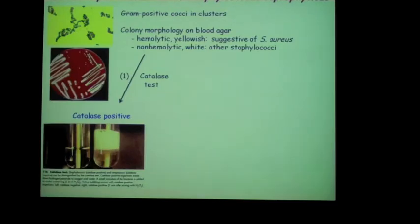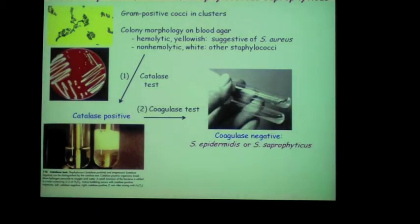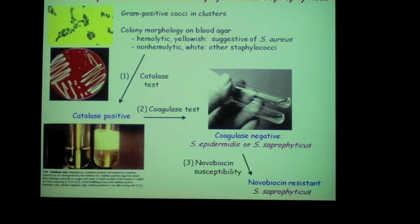Staphylococci are gram-positive cocci in clusters. Staphylococcus aureus is the major pathogen among Staphylococci and has a yellowish color on blood agar, whereas other Staphylococci have a whitish color. The catalase test is used to distinguish Staphylococci from Streptococci, and the coagulase test is used to identify Staph aureus. The coagulase-negative Staphylococci include Staph epidermidis and Staph saprophyticus, and the laboratory uses the novobiocin test to distinguish Staph saprophyticus from Staph epidermidis.